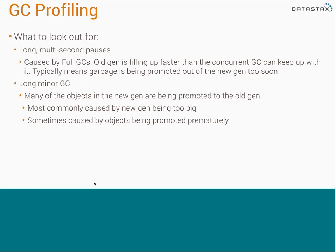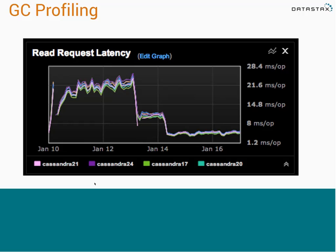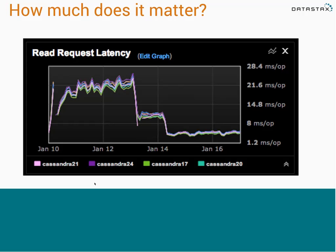What you want to look out for is long multi-second pauses caused by full GC — that means your old gen is filling up really fast and stuff is being promoted out of the new gen too soon. Long minor GCs mean a lot of objects are being promoted into the old gen and generally your new gen is too big. JVM tuning really matters — at my last company, after doing a bunch of JVM tuning, we got dramatically better results. It is absolutely necessary.